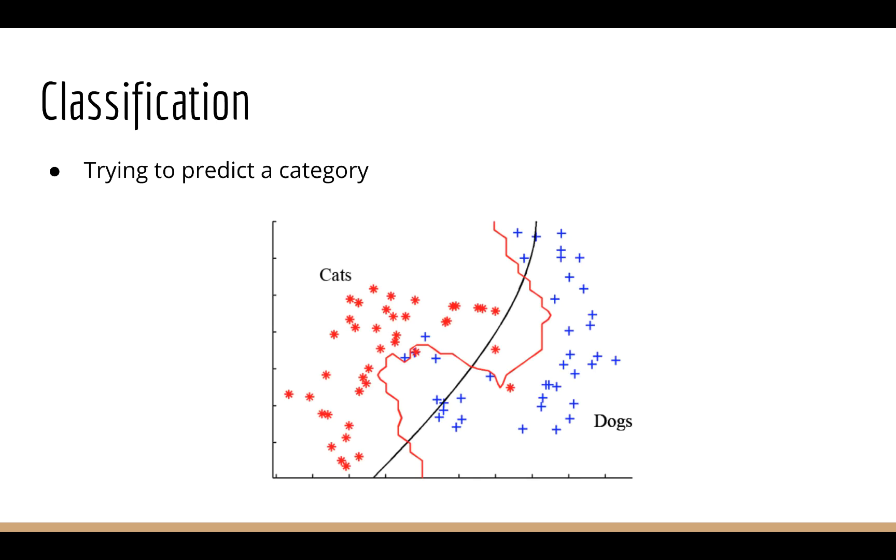When we're doing classification, what we're trying to do is predict a category. This might sound complicated if you've never heard of this before, so I think it's best to do some examples.